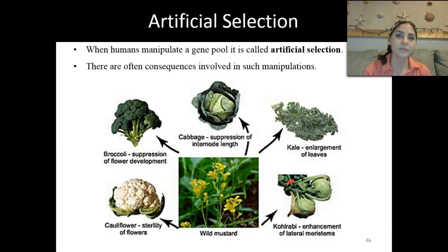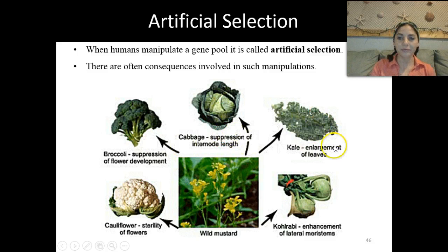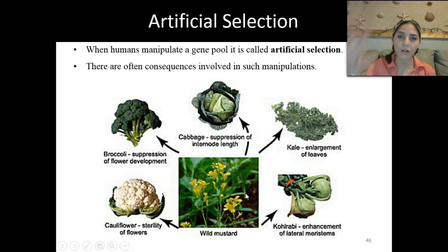Artificial selection is when humans manipulate a gene pool, and there are often consequences in such manipulations. From wild mustard, we have cultivated and artificially selected for different traits to come up with: broccoli by suppressing flower development, cabbage by suppressing the internode length, kale by enlargement of leaves, kohlrabi by enhancement of lateral meristems, and cauliflower by sterility of the flowers. All of those have come from a wild mustard plant.